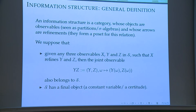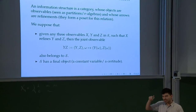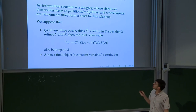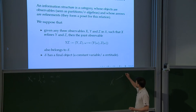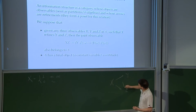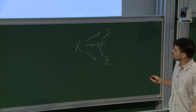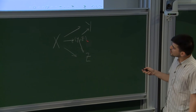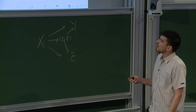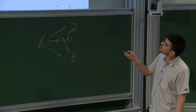Once you have done that, we will put a name to it. The name is an information structure. An information structure is a category that organizes all this data. The objects of the category — the vertices of the graph — are the observables, and the arrows are the refinement relations. We will assume that each time you have a variable X that is a refinement of two other variables Y and Z, you can make a construction called the joint variable. The joint variable, at the level of partitions, is the coarser partition that is finer than both the partition of Y and the partition of Z. We see this as a product — in fact it is the categorical product. You also need compositions of arrows and identities.